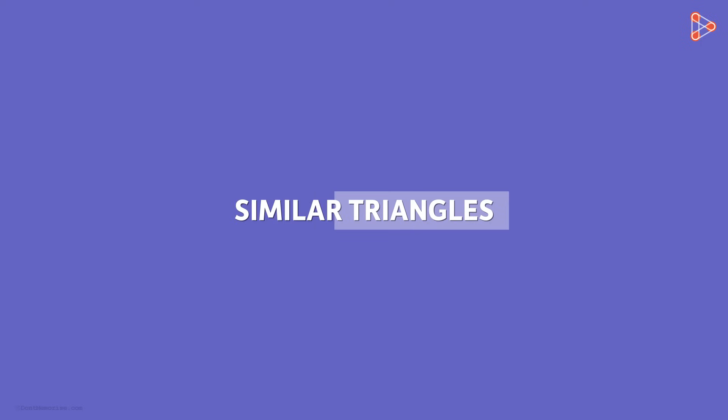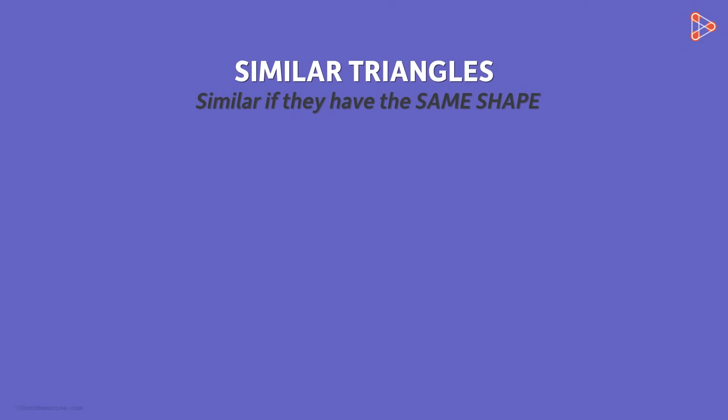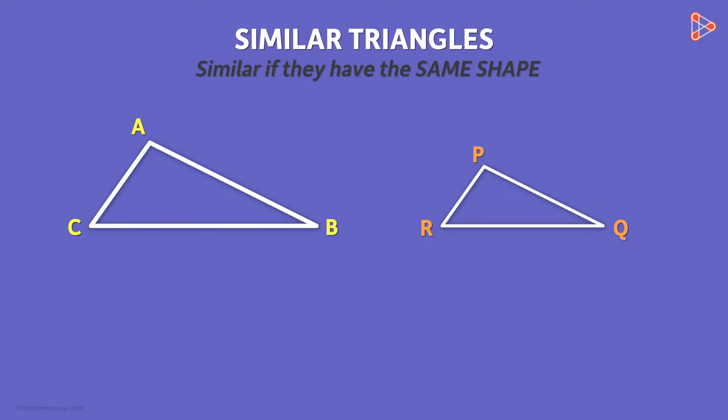In simple language, triangles are said to be similar if they have the same shape. For instance, these two triangles are similar since they have the same shape. This triangle is just a scaled down version of this. These two are also similar triangles.